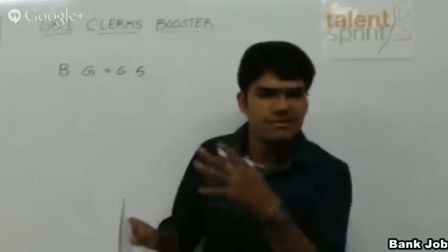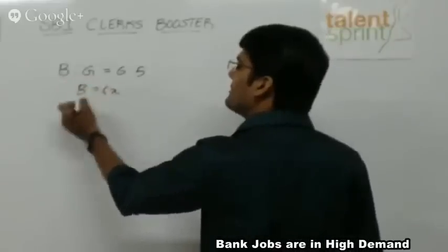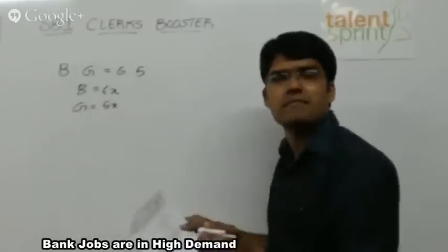So ideally how do people solve this? Traditional method, let me show you. I can say boys equals 6 parts, 6x, girls equals 5x. That is what they mean, 6 parts and 5 parts.